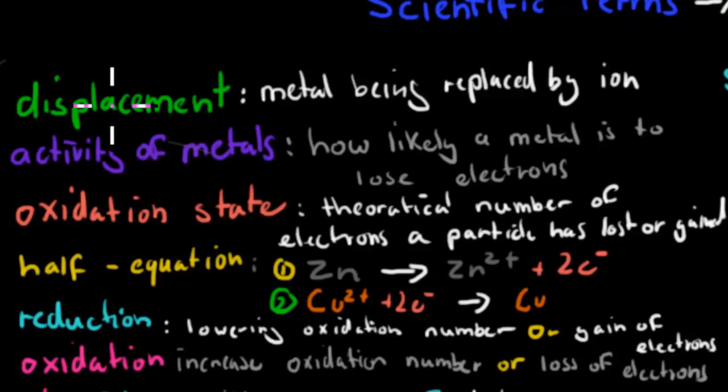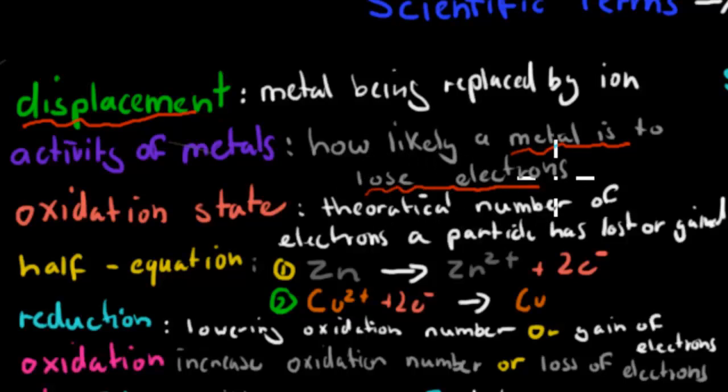First is displacement. In displacement we're talking about metal being displaced by or replaced by an ion. So for example if we have a zinc electrode and then we have copper ions and the copper goes onto the zinc, then copper is replacing zinc so it's being displaced. The activity of metals is how likely a metal is to lose electrons. So for example, zinc is more active than copper because zinc likes to lose electrons more than copper does.